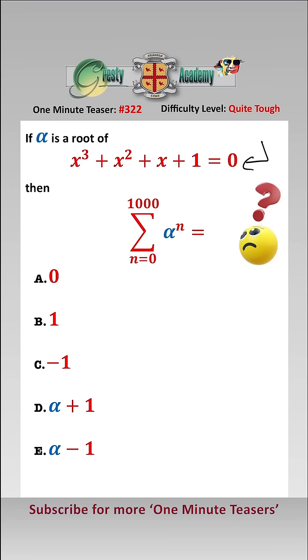As alpha is a root of this equation, we know that alpha cubed plus alpha squared plus alpha plus one equals zero.